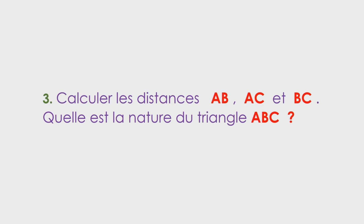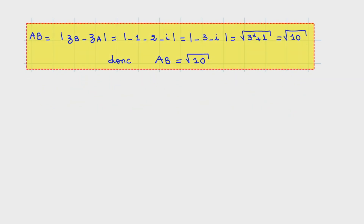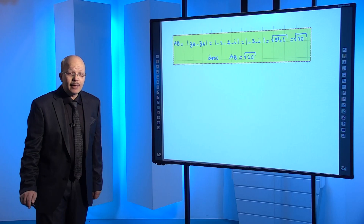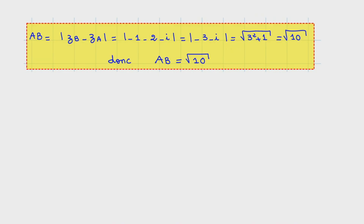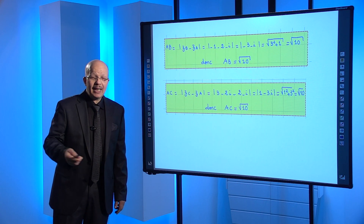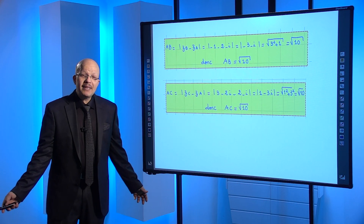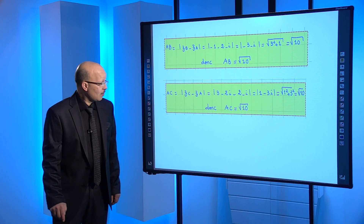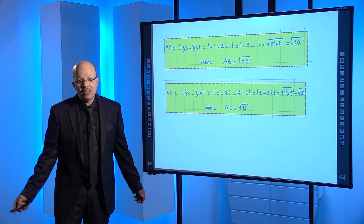On calcule maintenant les distances AB, AC et BC. La distance AB = |ZB - ZA| = |(-1) - (2+i)| = |-3-i| = √(9+1) = √10. La distance AC = |ZC - ZA| = |(3-2i) - (2+i)| = |1-3i| = √(1+9) = √10. On remarque que AB = AC = √10, donc le triangle ABC est isocèle en A.